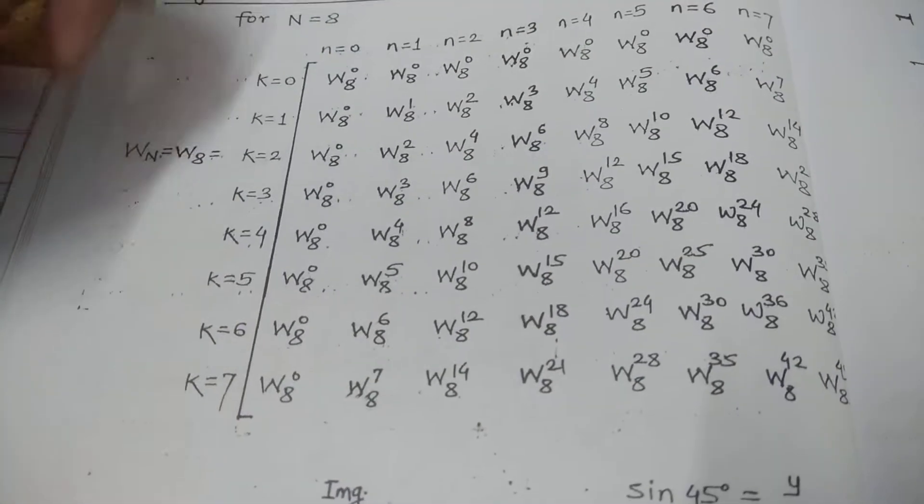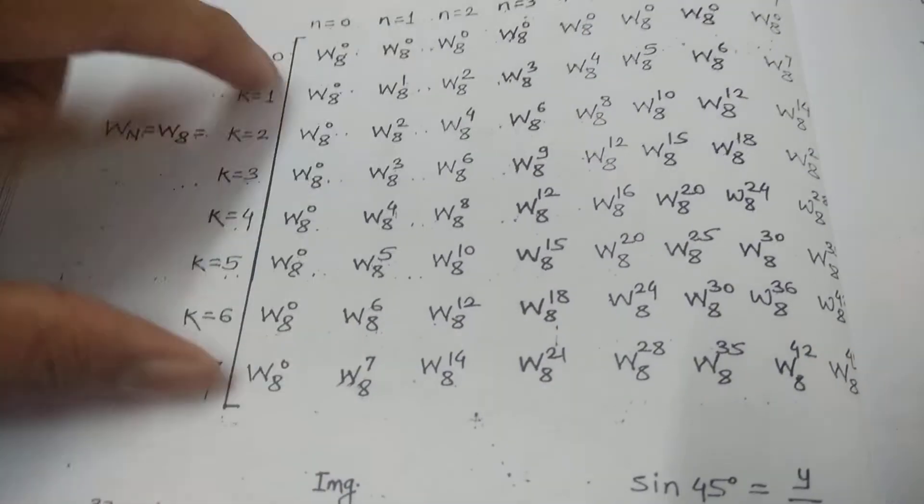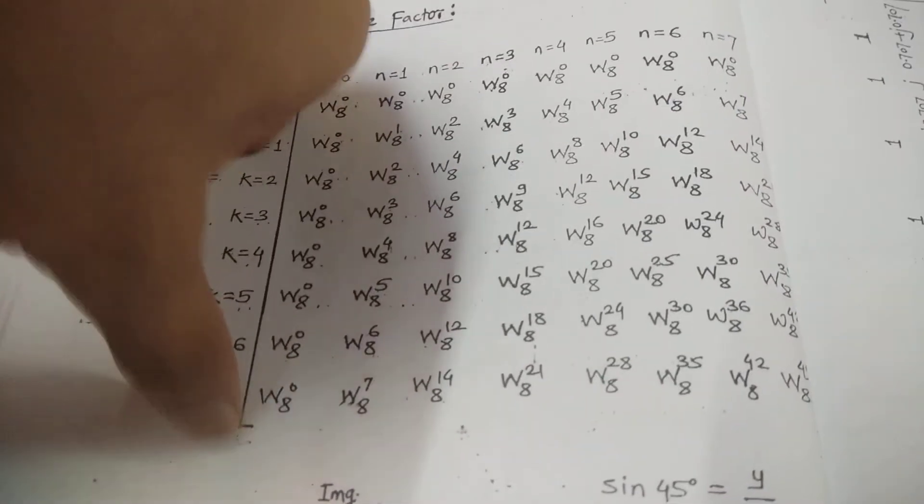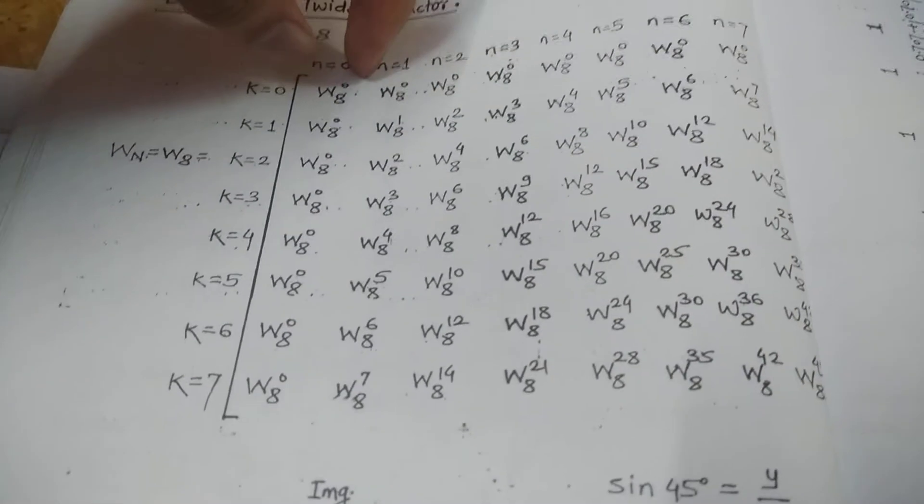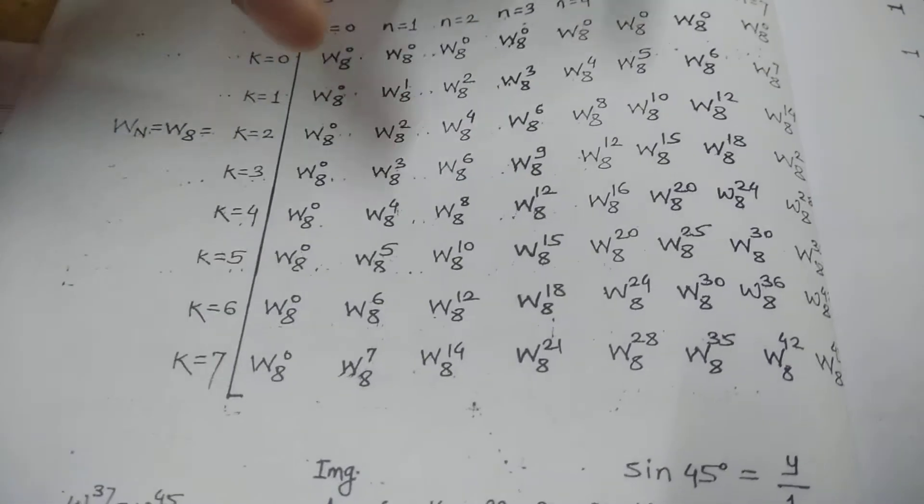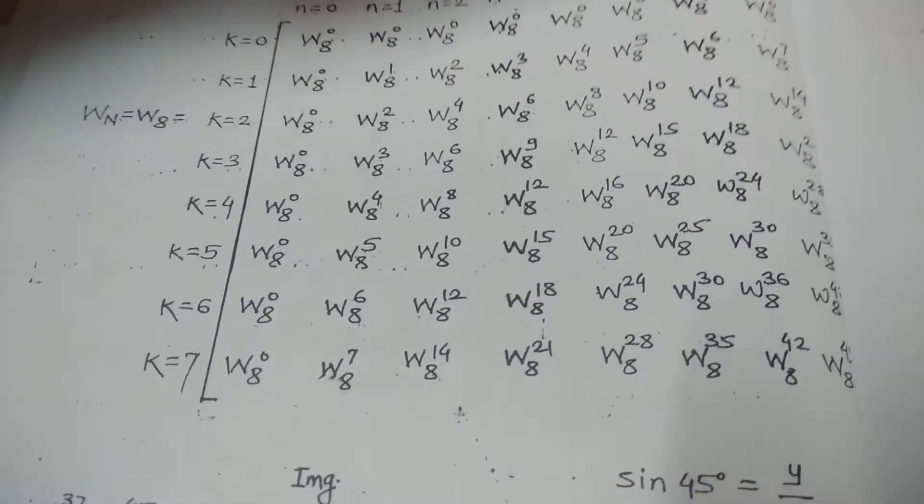In this matrix you have W8, so you will have 8 columns and 8 rows. In other videos I have discussed the methods how to make this particular matrix.